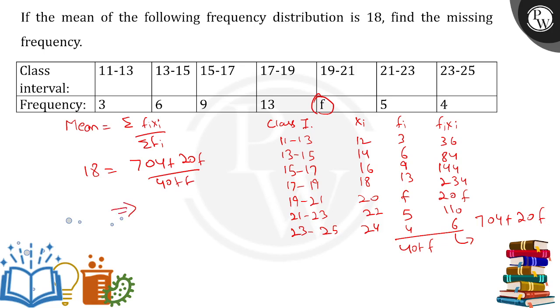So after doing the calculation over here, the value of f would come out to be 8 simply, and that is the missing frequency.